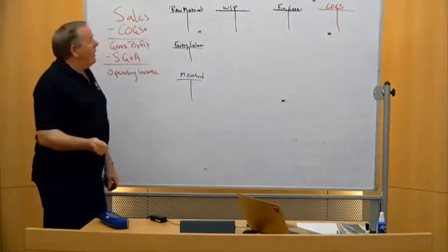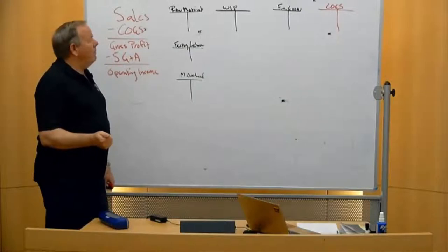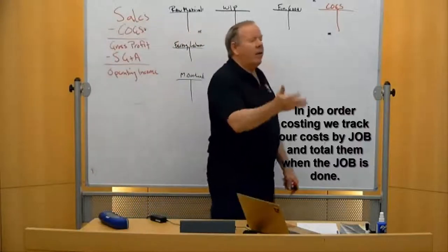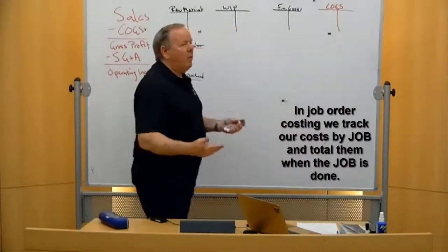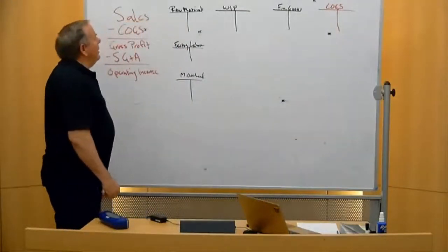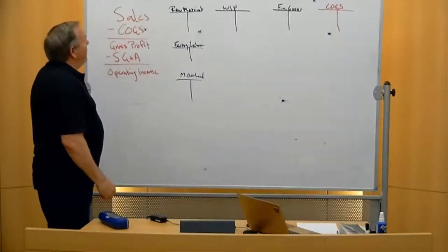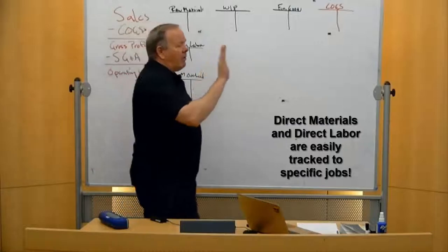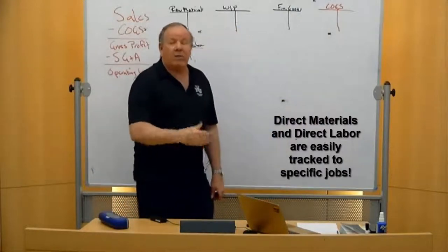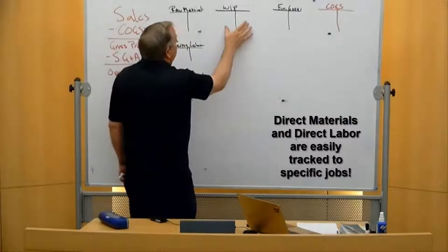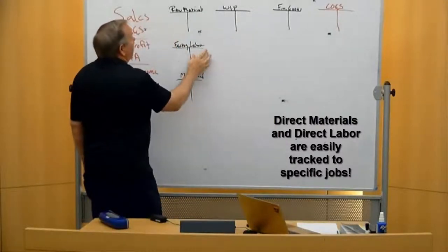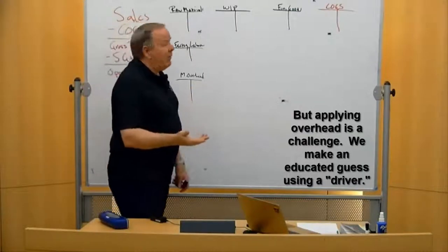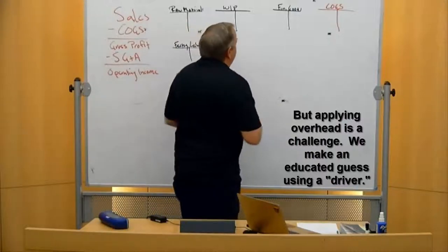Chapter 20 was about job order costing. If we're building a house in San Lorenzo and a house in Black Hawk, we keep track of those jobs separately so we know how much it cost to make each house. The only tricky part about job order costing is manufacturing overhead — materials are easy to track, and we can look at time cards for direct labor hours, but overhead is just a guess.